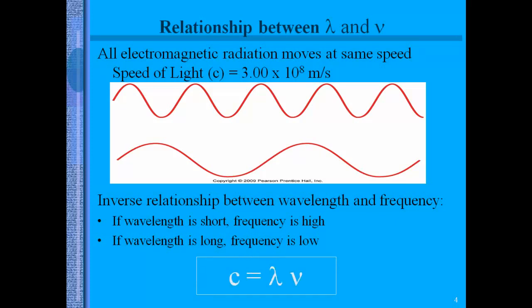Using this inverse relationship, we can write a mathematical expression, speed of light equals the wavelength times frequency. Using this, if we know any frequency or any wavelength of light, we can figure out the other. If we know the wavelength, we can find frequency. If we know the frequency, we can find wavelength, because the speed of light is always 3.00 times 10 to the eighth meters per second.